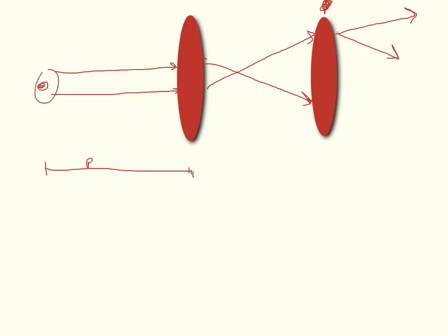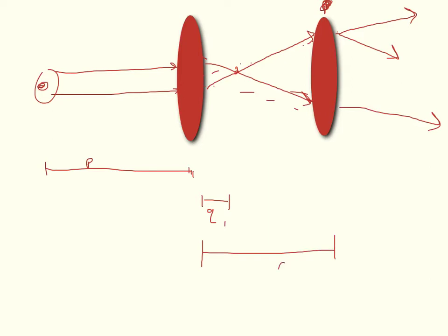So right now, let's just assume that because the object is pretty far away, it forms somewhere behind the lens. We don't know how far behind, so it's going to still form somewhere behind the lens. I know that's what's going to happen because I've worked the problem, but for your numbers it might not. So this is where Q1 is, right here. And the distance between the two lenses, D, is this.